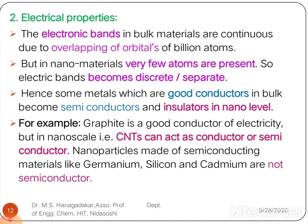Now let us discuss the second size-dependent property: electrical properties. Nanoparticles exhibit different electrical properties compared to bulk because the electronic bands in bulk metals are continuous due to overlapping of atomic orbitals of billions of atoms. But in nanomaterials, very few atoms are present due to size reduction, so the energy bands become very discrete.